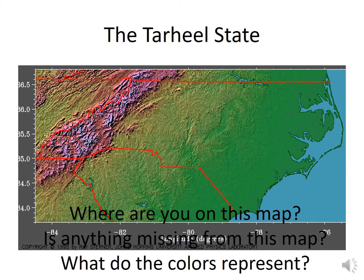Here is the state — where are you on this map? We're around here, in this little circle. Is anything missing from this map? It doesn't break down the counties, and it doesn't have a key that tells us what everything means. But if you look at the colors, you can see this is more of the plains going into the mountains — so that area right there is the mountains.